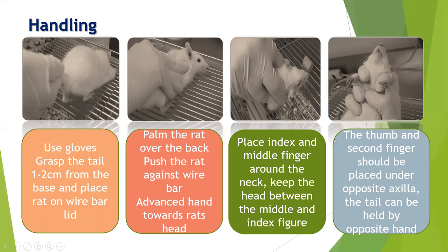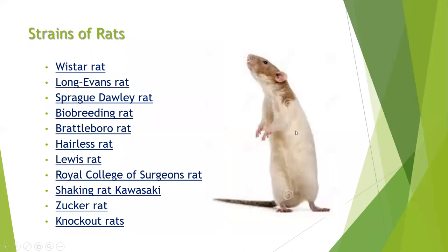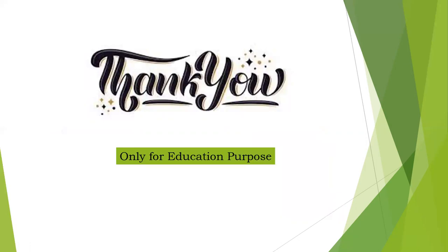There are various strains of rats available, such as Wistar rat, Long-Evans rat, Bio-Breeding rat, Brattleboro rat, Hairless rat, Levy's rat, Royal College of Surgeons rat, Shaking rat Kawasaki, and knockout rats. Individual strains have sensitivity, specificity, and applicability for different diseases. This video is intended for undergraduate and postgraduate students in biomedical sciences and pharmaceutical sciences who are using rats as experimental animals. Thanks for listening.